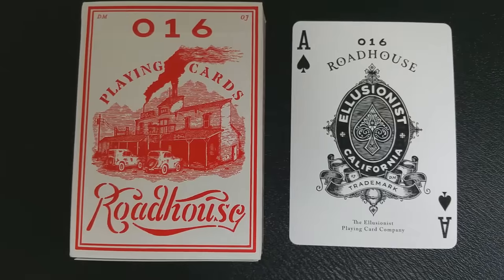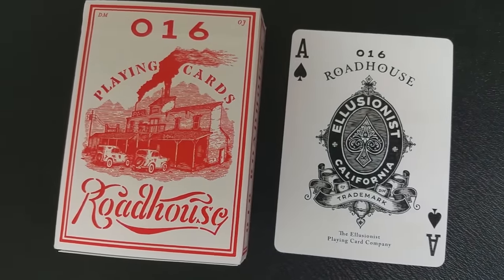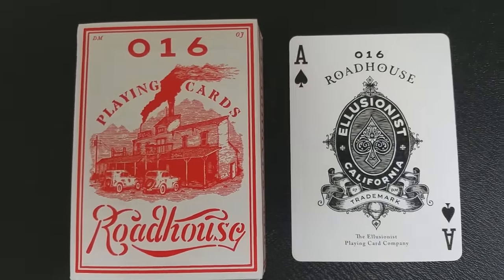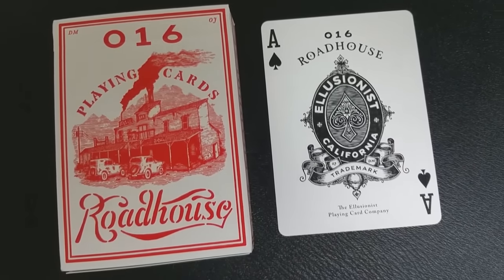So here on the Ace of Spades, you have that same design that was on the back of the tuck case. It says 16 Roadhouse across the top, Illusionist California trademark. And then the bottom says the Illusionist Playing Card Company.